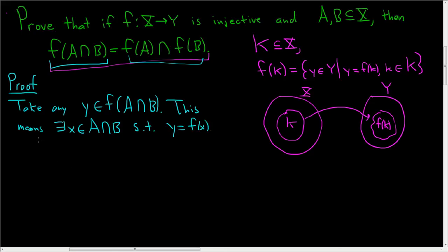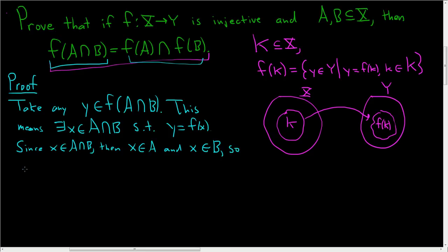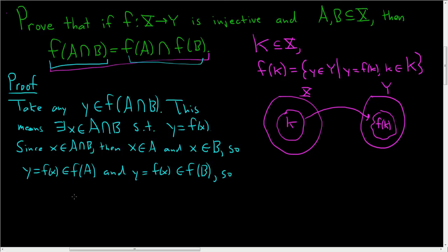What does it mean for X to be in the intersection? Well, since X is in the intersection of A with B, this means that X is in A and X is in B. So that means that Y, which is equal to F of X, is in F of A. And Y, which is equal to F of X, is also in F of B. So Y is in F of A and Y is in F of B, so Y is in the intersection of F of A with F of B.